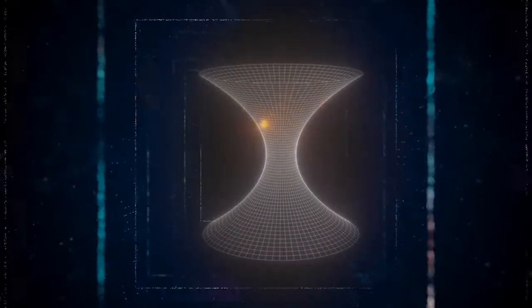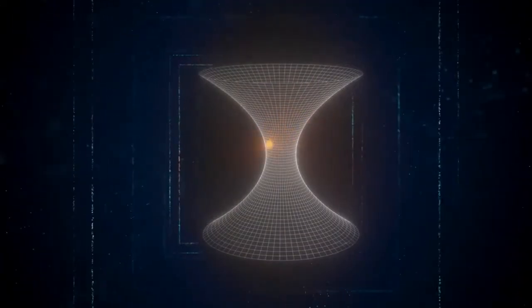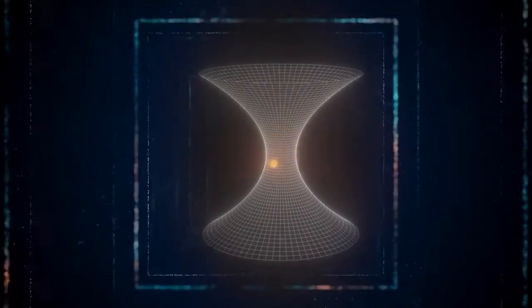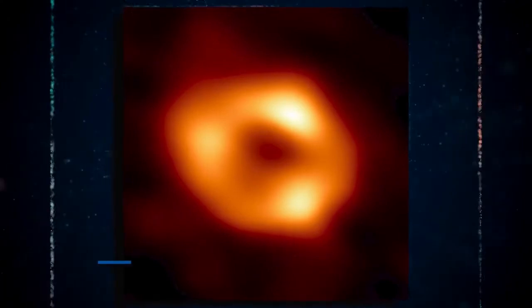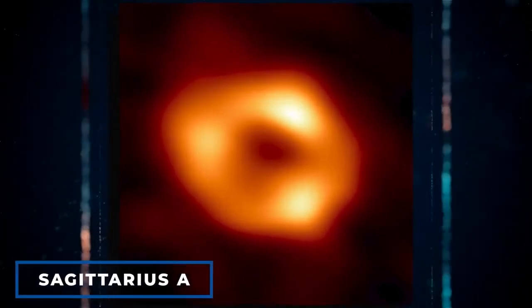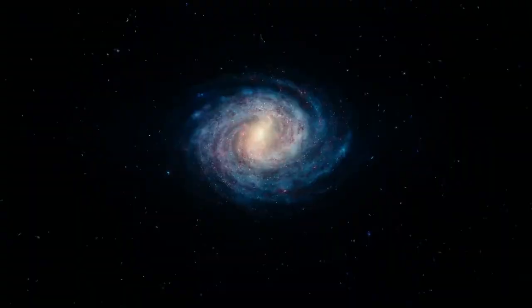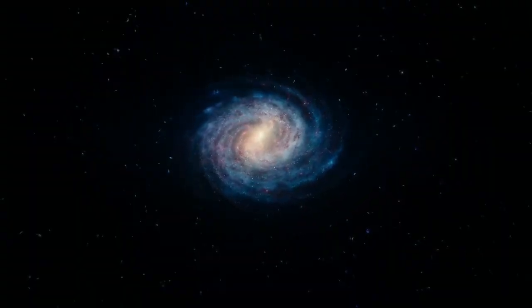A wormhole's existence would need strong gravitational forces and a significant dilation of space-time. For this reason, some scientists suggest looking for wormholes in the vicinity of supermassive black holes like Sagittarius A, which resides in the heart of our Milky Way galaxy.